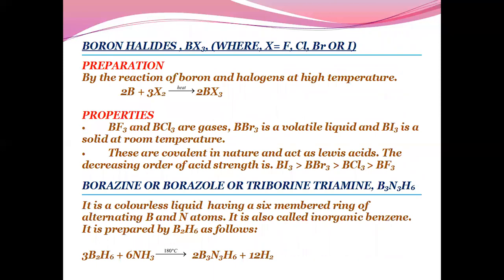Boron halides: Preparation by the action of boron and halogens at high temperature. BF3 and BCl3 are gases, BBr3 is volatile liquid and BI3 is a solid at room temperature. These are covalent in nature and act as Lewis acids. The decreasing order of acidic strength: BI3 greater than BBr3 greater than BCl3 greater than BF3.